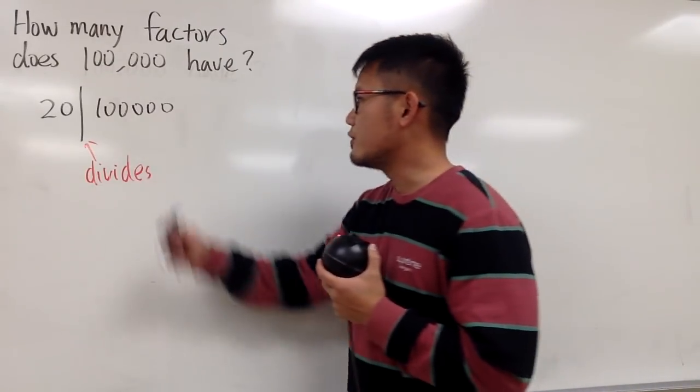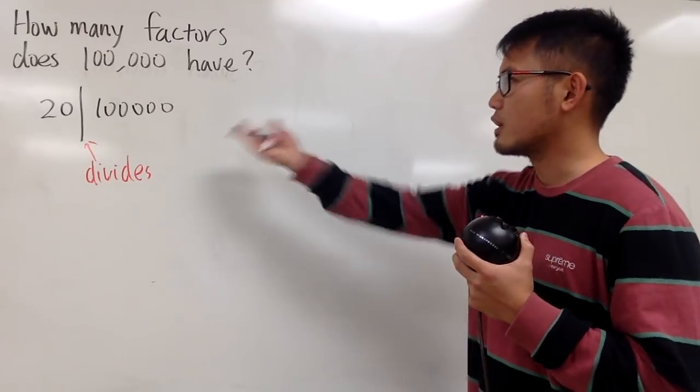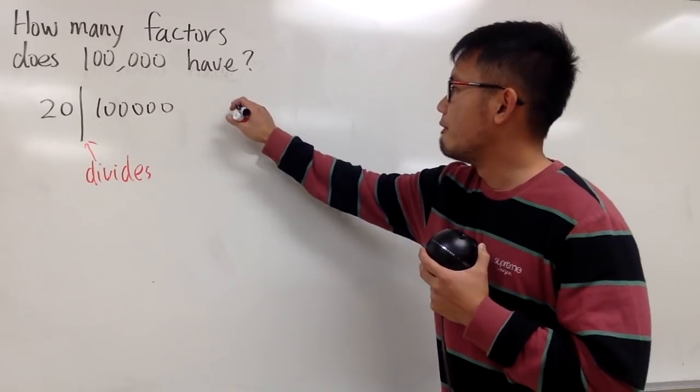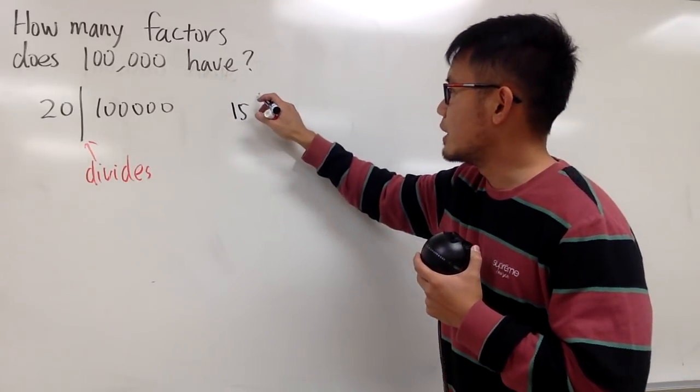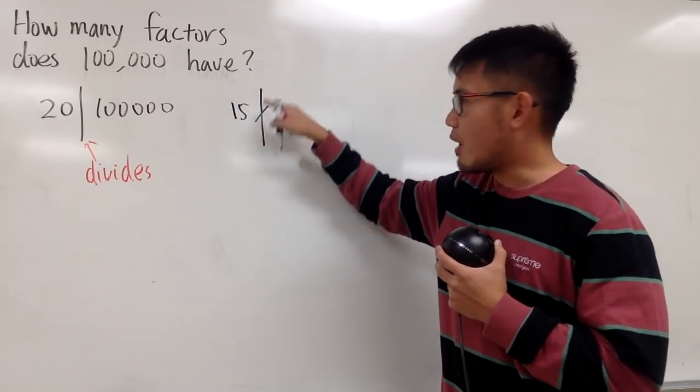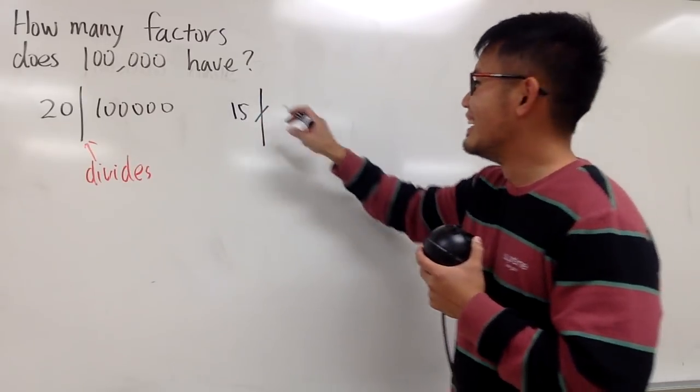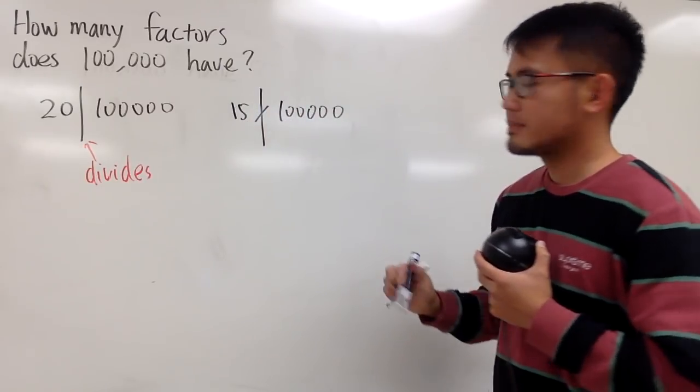Meaning that this goes into this number, like, completely, or evenly, or whatever you want to say. So this is the notation for that, but let me just tell you guys another number that's not a factor of this, though. For example, 15 is not a factor of 100,000. So, we can write this. It doesn't divide, just vertical bar and cross. It does not divide 100,000.